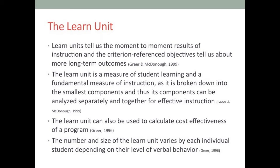The Learn Unit tells us the moment-to-moment results of instruction — you see immediately whether the student responded correctly or incorrectly, so you record a plus or a minus. The criterion-referenced objectives tell us about more long-term outcomes. It is a fundamental measure of instruction because it is broken down into the smallest components, which can then be analyzed separately and together for effective instruction.